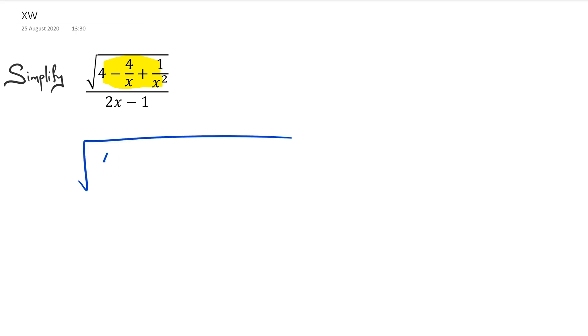What I'm going to do is write the square root symbol and I've got 4 minus 4/x plus 1/x². Because x² is the common denominator, I'm going to make everything into x² as a common denominator.